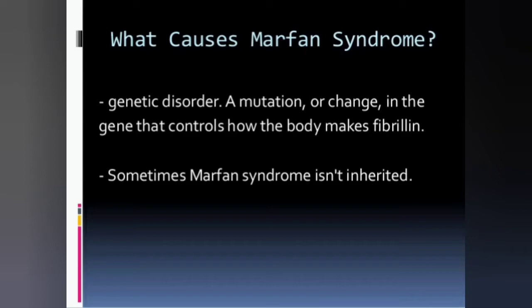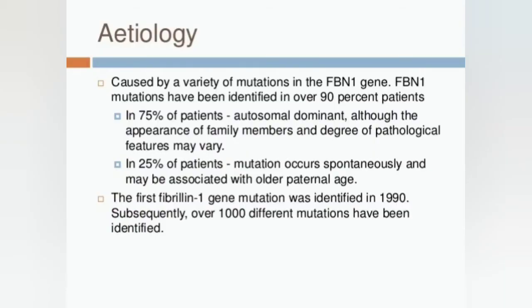Marfan syndrome is a genetic disease mainly caused by mutation in the FBN1 gene — remember this gene name. FBN1 mutation is generally found in 90% of patients. 75% of patients show autosomal dominant inheritance, although the degree of pathological variation may vary among familial members, and 25% of patients have mutations that occur spontaneously.